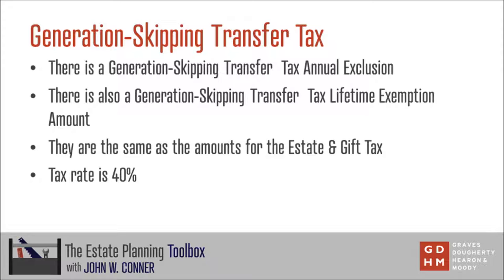Also like the estate and gift tax, there is a lifetime exemption amount that applies to the generation-skipping transfer tax. It is currently at $11.18 million, or in the case of married couples, $22.36 million, that can be transferred to skip persons either directly or indirectly without being subject to the generation-skipping transfer tax. If you make a gift to a trust, you would assign a corresponding amount from the GST lifetime exemption to that trust so that any distributions that later come out of that trust to skip persons would not be subject to the generation-skipping transfer tax.